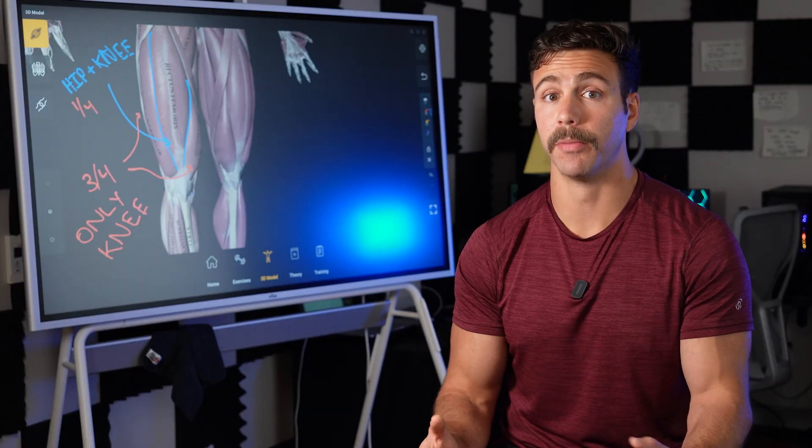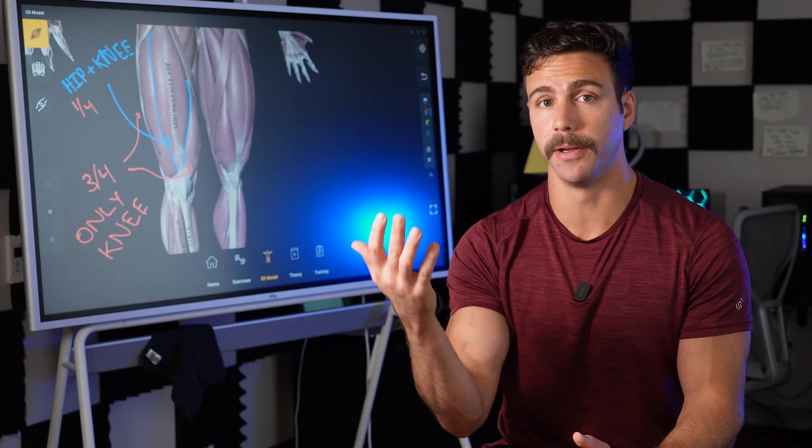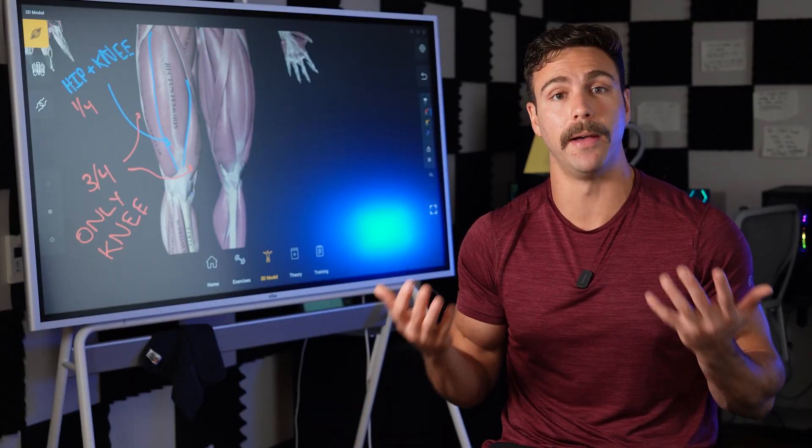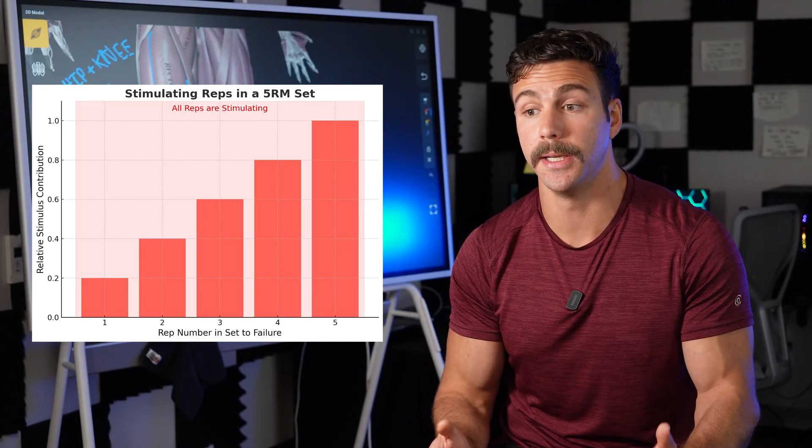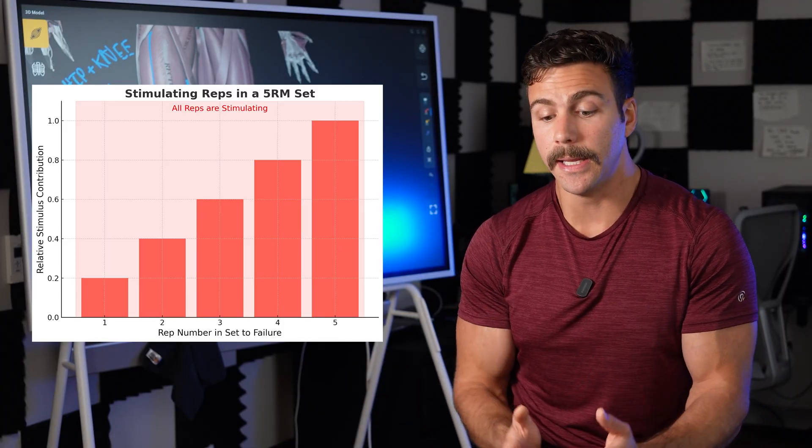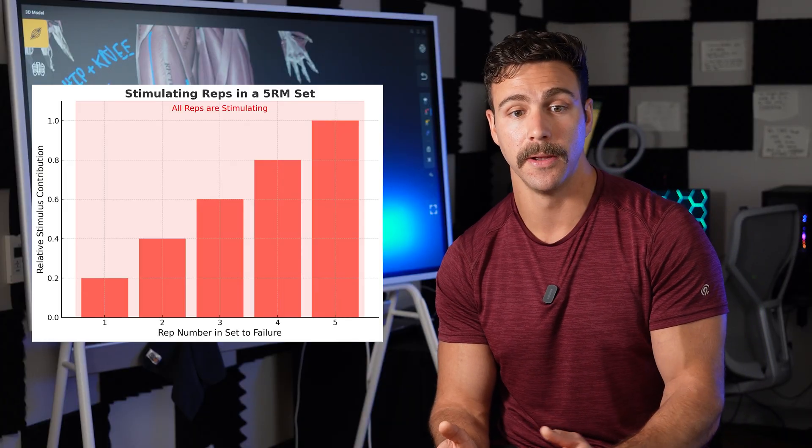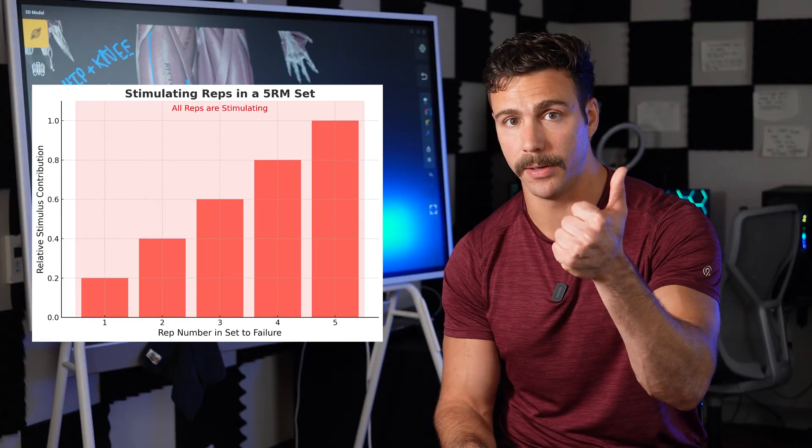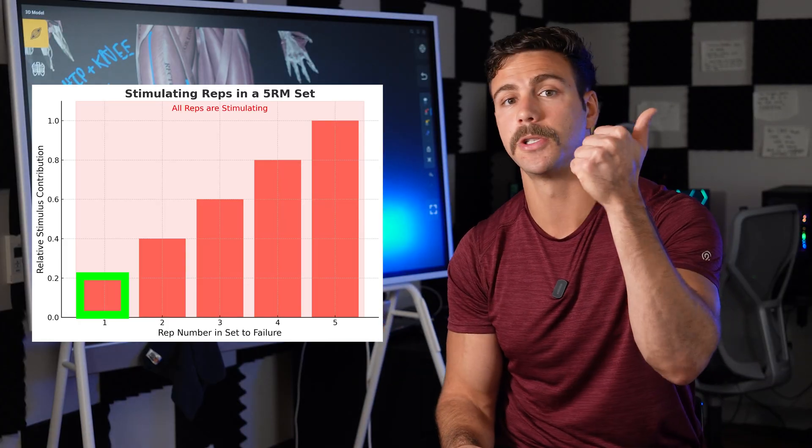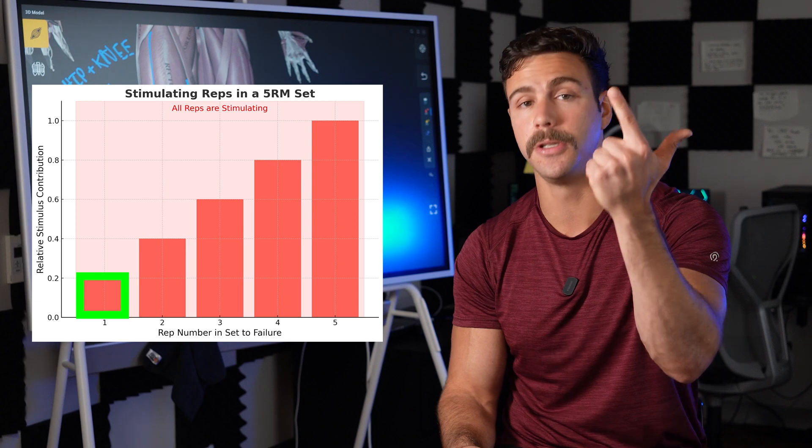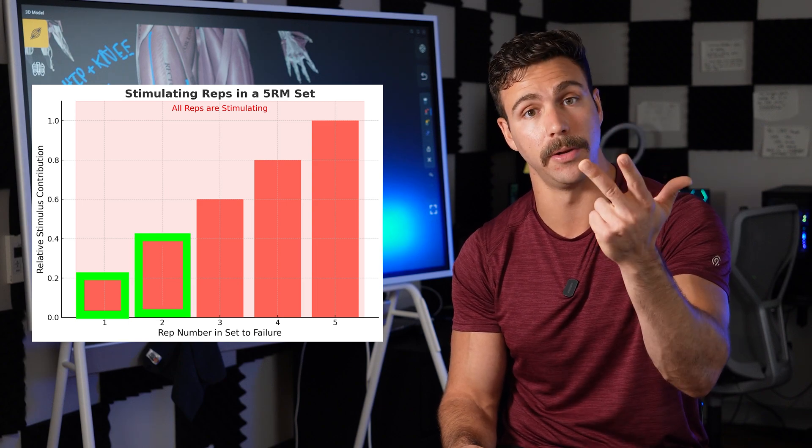Now, when we're considering a set where we've achieved five stimulating reps, let's say doing a five rep max, what the model suggests is that more or less, each of these reps is created equally in terms of stimulus. So if I did one rep for my five rep max weight, I would get 20% of the stimulus. If I did two reps, I would get 40%, three reps, 60%, four reps,